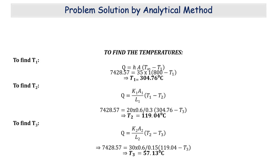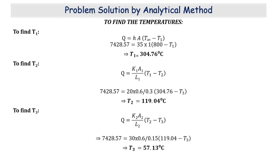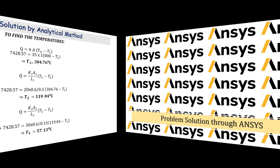To find the temperatures at the salient points: for T1, we use heat transfer through convection, giving T1 = 304.76 degrees Celsius. For T2 and T3, we use Fourier's law of heat conduction, and the corresponding temperatures are 119.04 degrees Celsius and 57.13 degrees Celsius. These are the data found using the analytical method, and now we shall solve the same problem using the ANSYS approach.